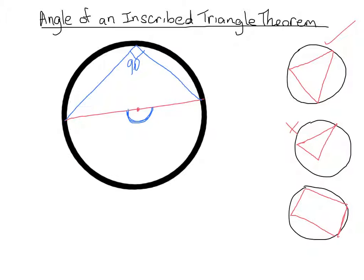The theorem states: an inscribed angle of a triangle intercepts a diameter or a semicircle at a right angle. So now we can use this information to solve a problem.